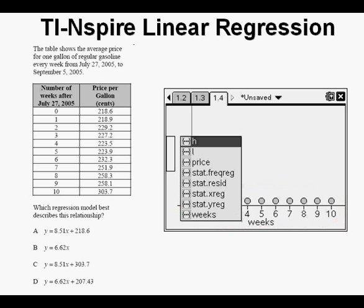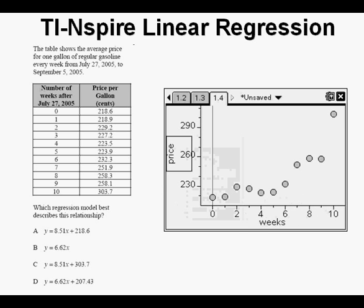We see all the weeks lined out 0 through 10 on the independent variable axis. Press tab again. We see price here on the left. Go down to price and press enter. We see the scatter plot of the data laid out before us.